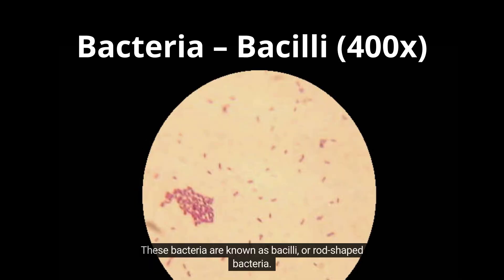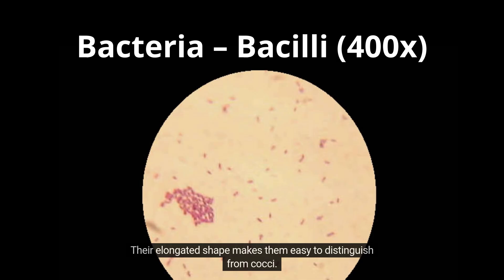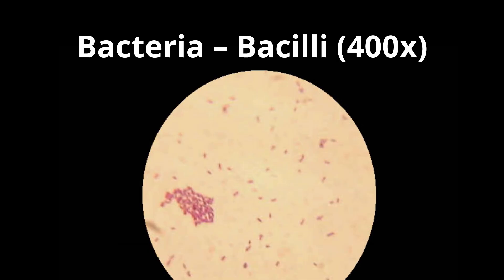These bacteria are known as bacilli, or rod-shaped bacteria. Their elongated shape makes them easy to distinguish from cocci. Bacilli may occur alone or in chains. Their simple structure and shape are typical of prokaryotic cells, which are much smaller and simpler than plant or animal cells.